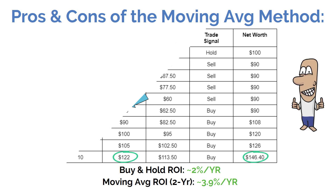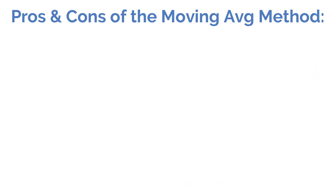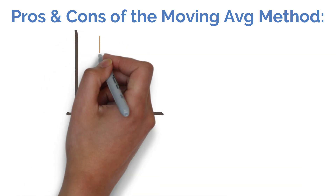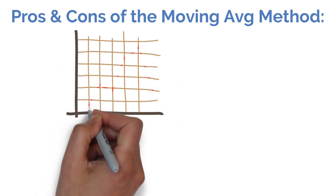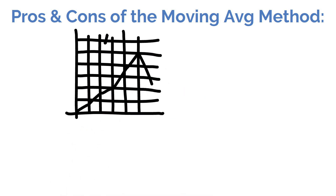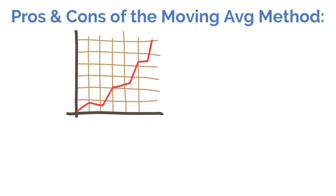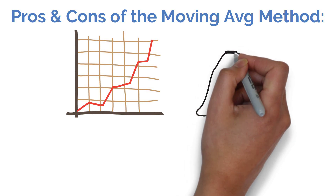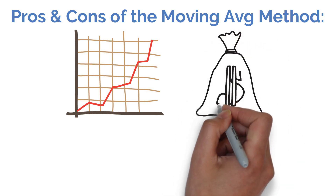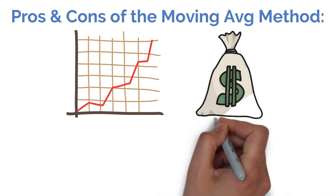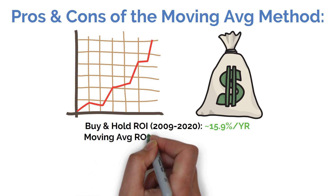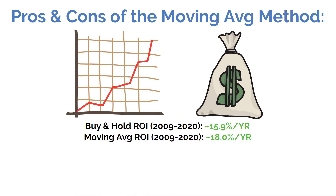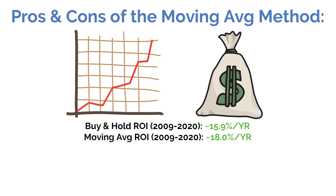For a great real-world example of a time period when the markets were trending upward in a way that produced superior returns for moving average investors, we need look no further than the 2010s. The markets peaked in October 2007, then dropped roughly 50% by March 2009 during the Great Recession, before rising more or less continuously for the next decade until early 2020. During that near 11-year period, a $10,000 investment in an S&P 500 index fund would have grown to roughly $50,000 using buy-and-hold. Using a simple 50-day moving average, your net worth would have been around $60,700 — about 15.9% per year annualized for buy-and-hold versus 18% per year for the moving average method.